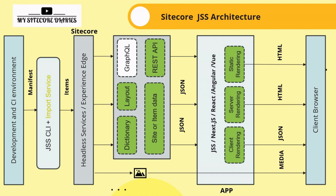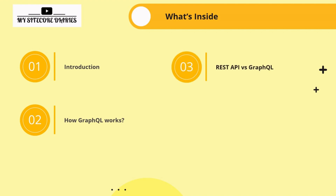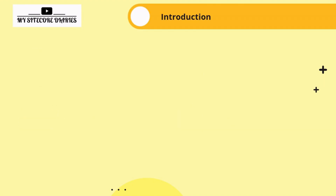So far in this series we have covered renderings, layout service, dictionary service — basically REST APIs. Today we are going to cover GraphQL. In this video we'll see what GraphQL is, its history, how it works at a high level, the difference between REST API and GraphQL, and finally how to set up GraphQL in Sitecore. This is an introductory summary — we just want to introduce what GraphQL is and why it is used in our architecture.